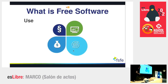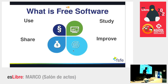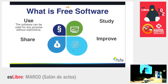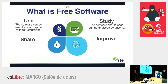To get us all on the same page: what is free software? Free software always comes with four freedoms — the freedom to use, to study, to share, and to improve. Whenever we have these four freedoms it's free software, also known as free and open source software, open source software, libre software, and so on. With these four freedoms we can use the software for any purpose without restrictions.